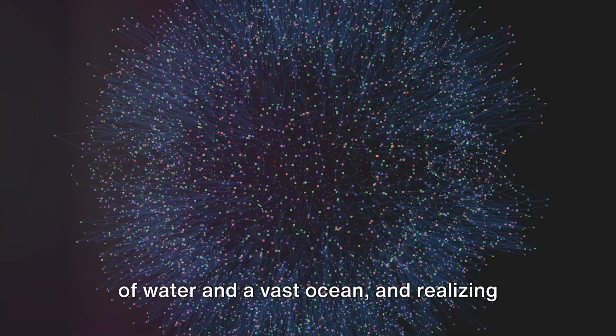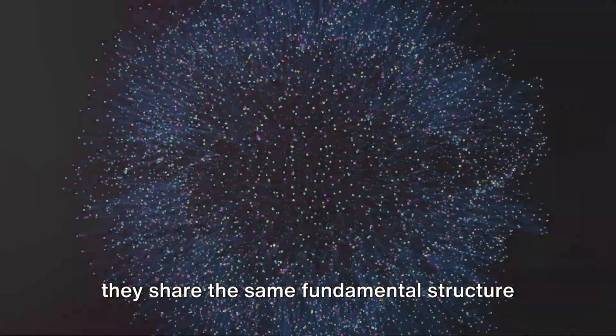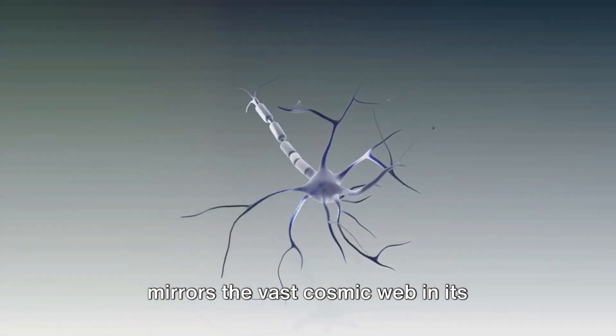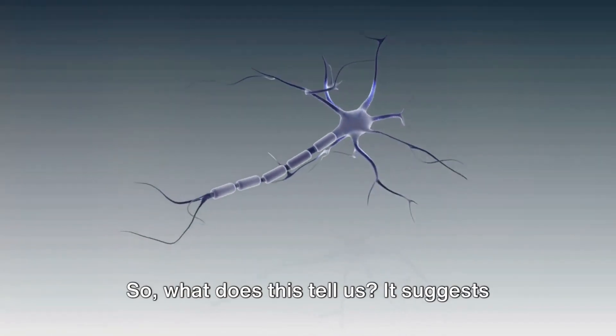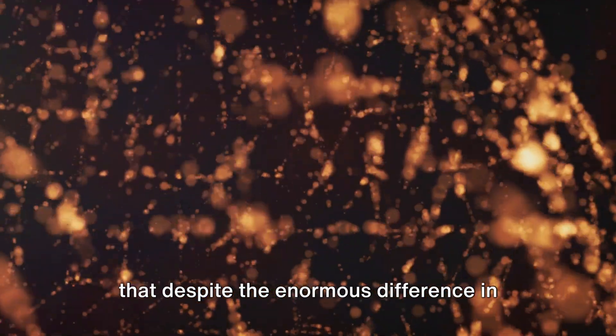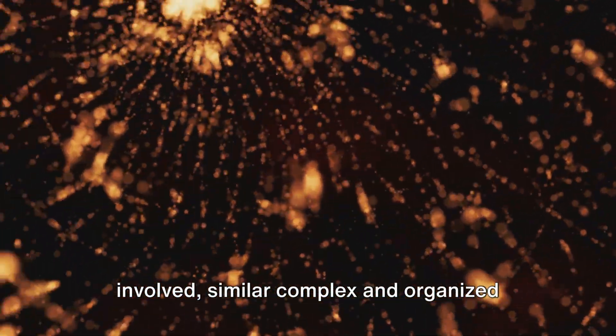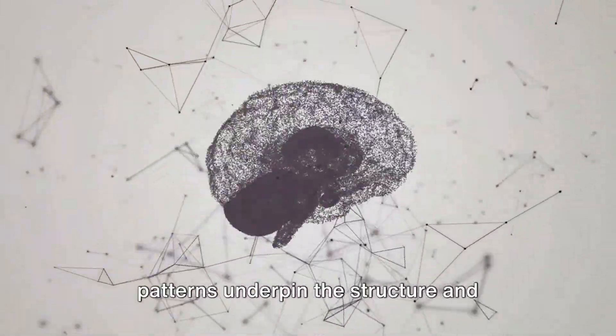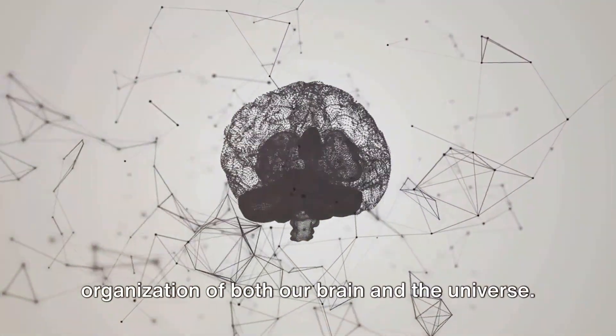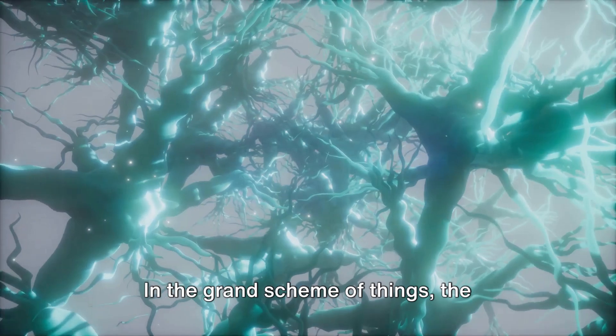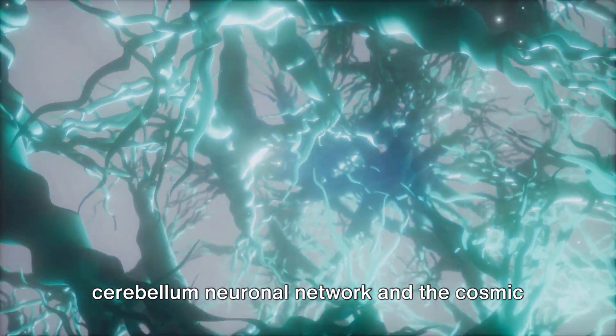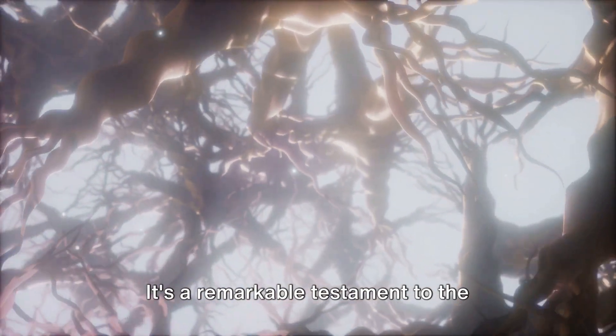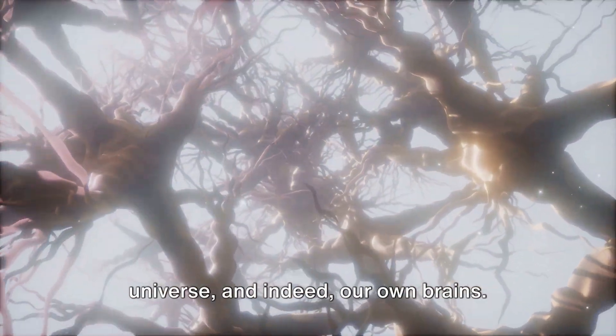It's a bit like looking at a tiny droplet of water and a vast ocean and realizing they share the same fundamental structure and patterns. It's mind-boggling to think that the cerebellum, a small part of our brain, mirrors the vast cosmic web in its structural organization. It suggests that despite the enormous difference in scale and the disparate physical processes involved, similar complex and organized structures can emerge. It's as if the same fundamental laws and patterns underpin the structure and organization of both our brain and the universe.